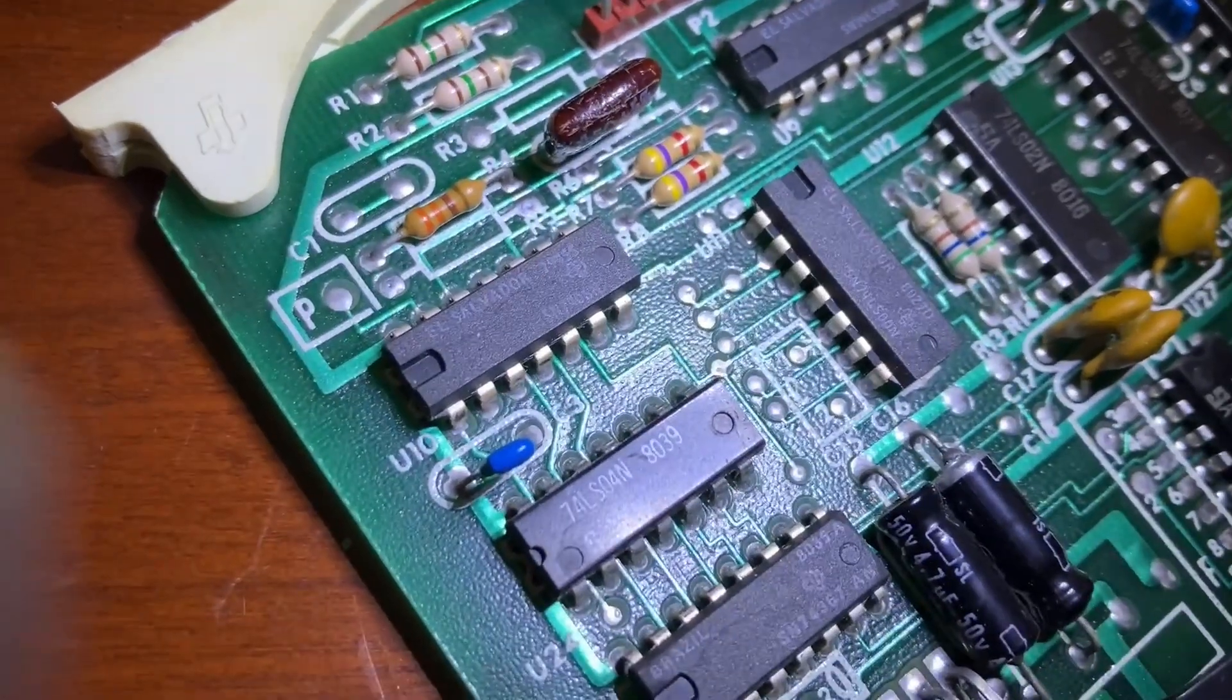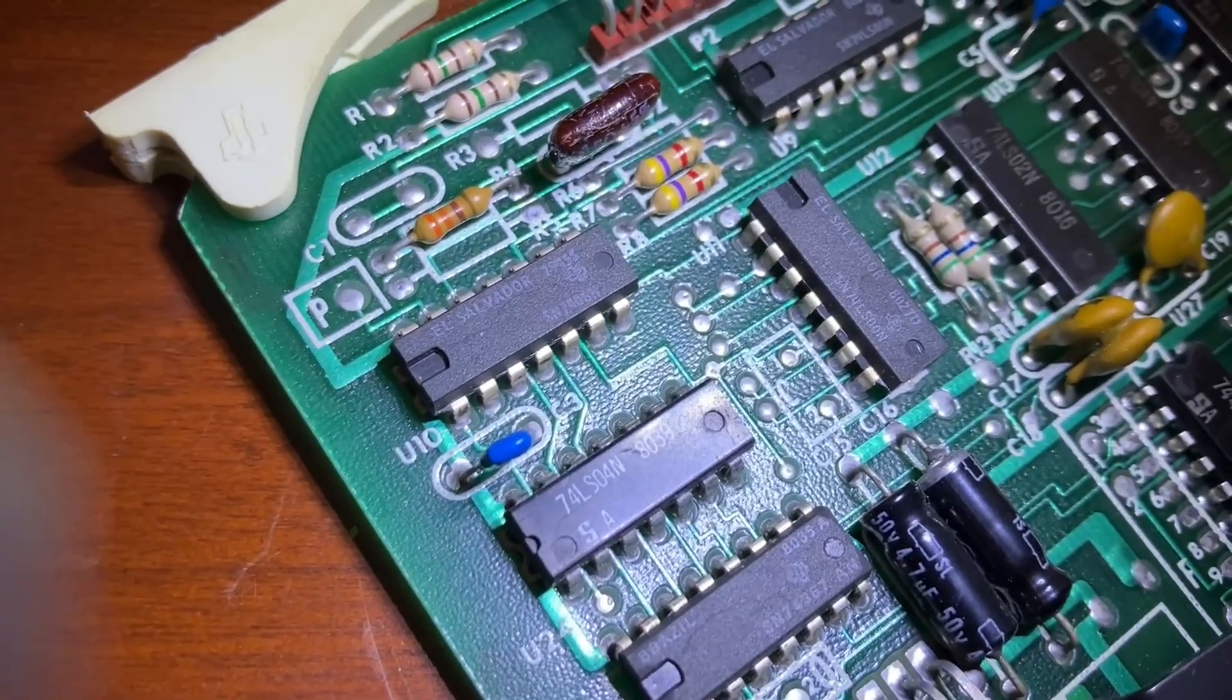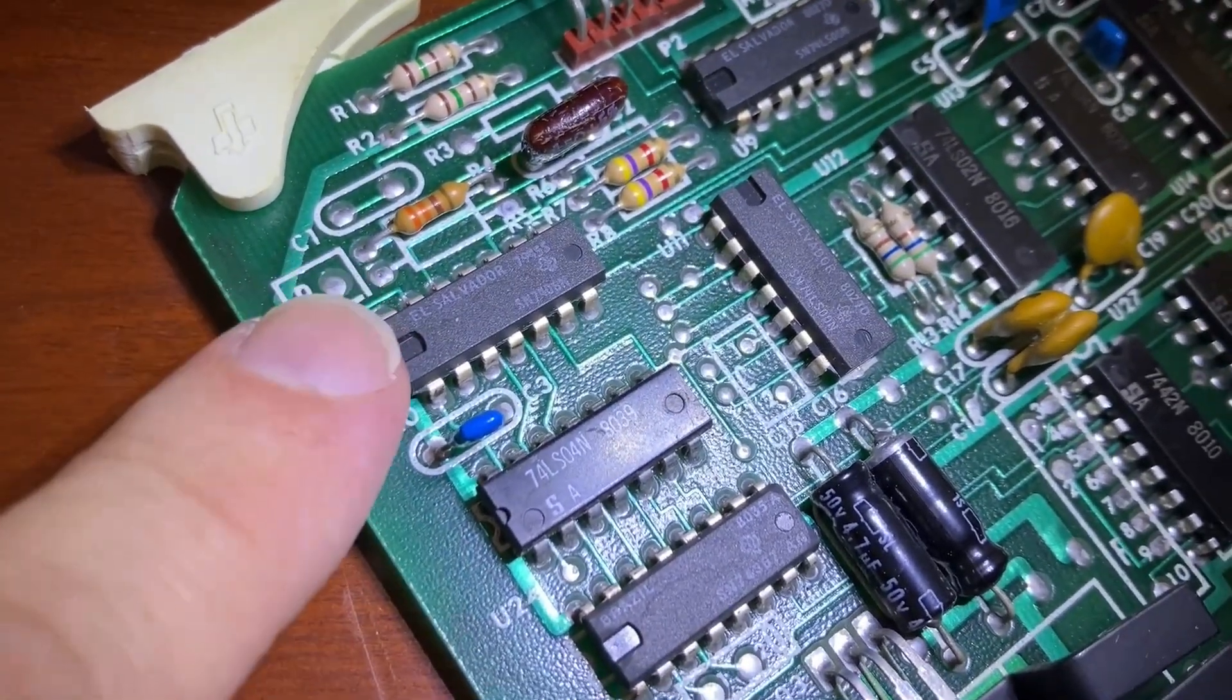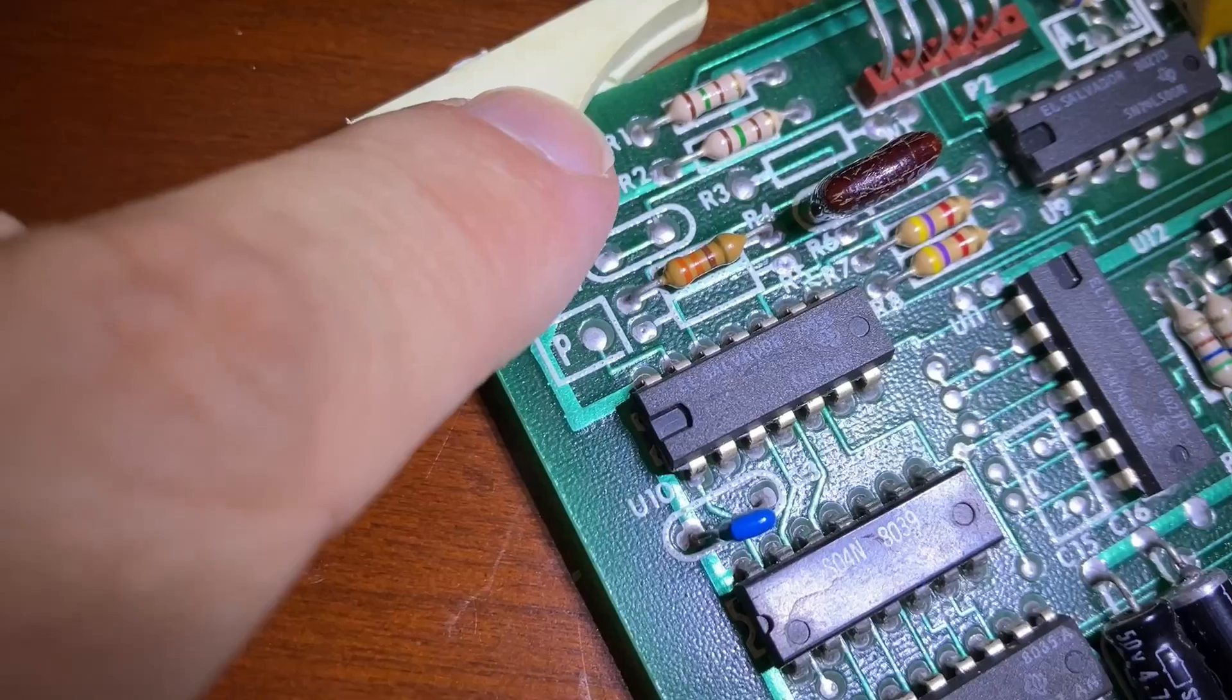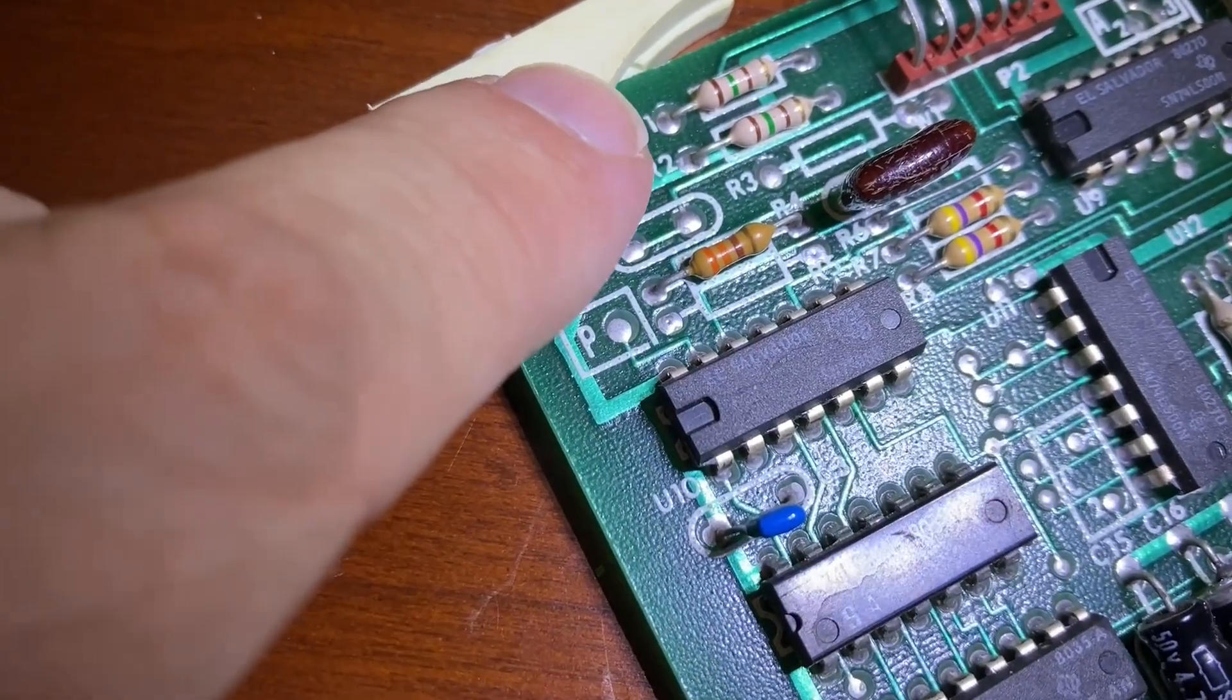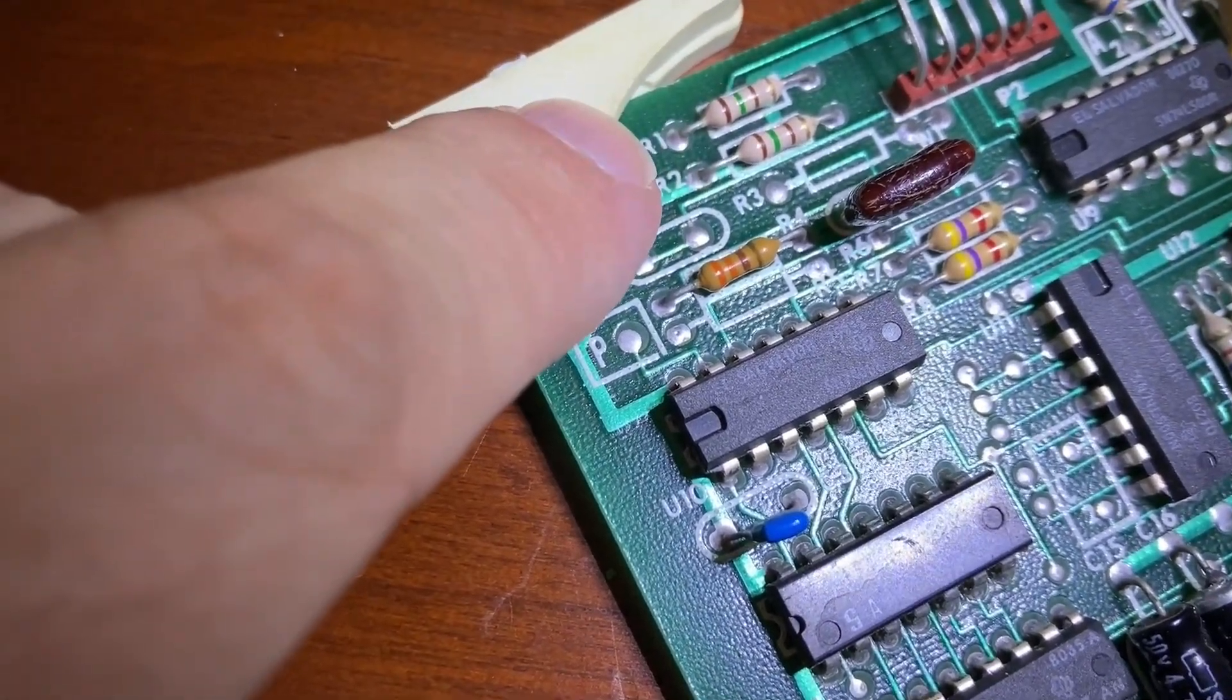So U10 is a 7406. So that's right here. And up here is R1. So we'll check to make sure one of these is getting five volts.